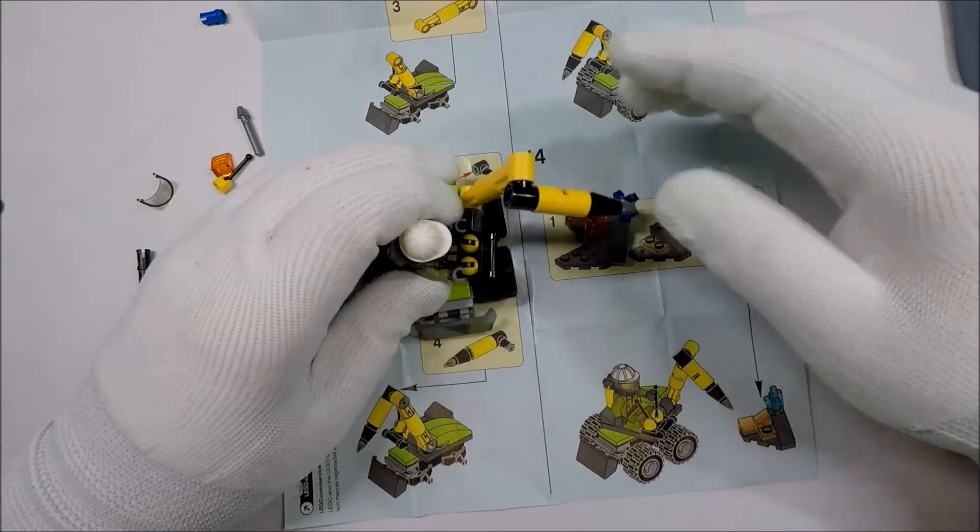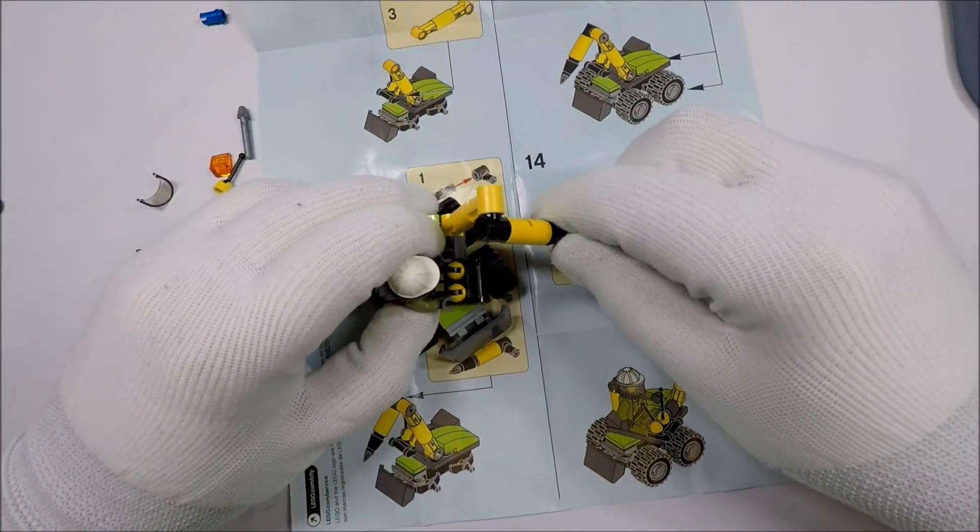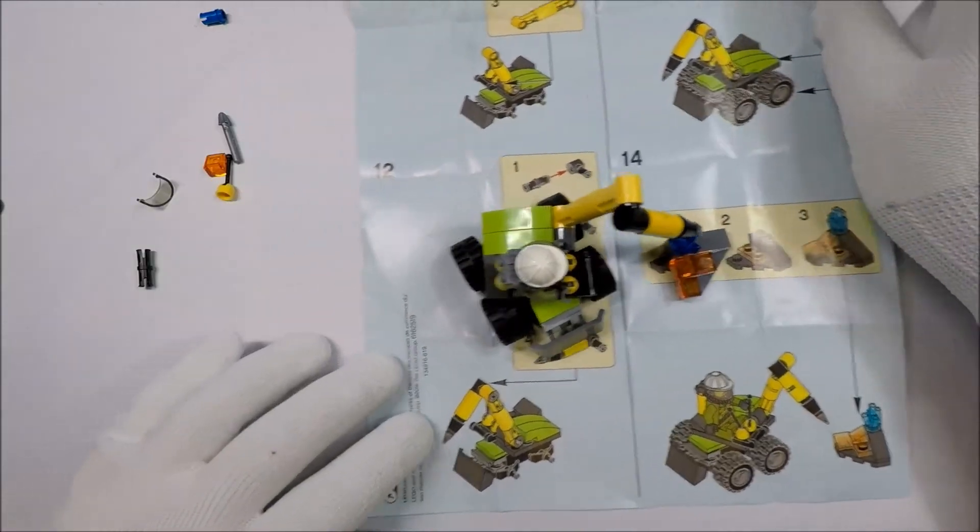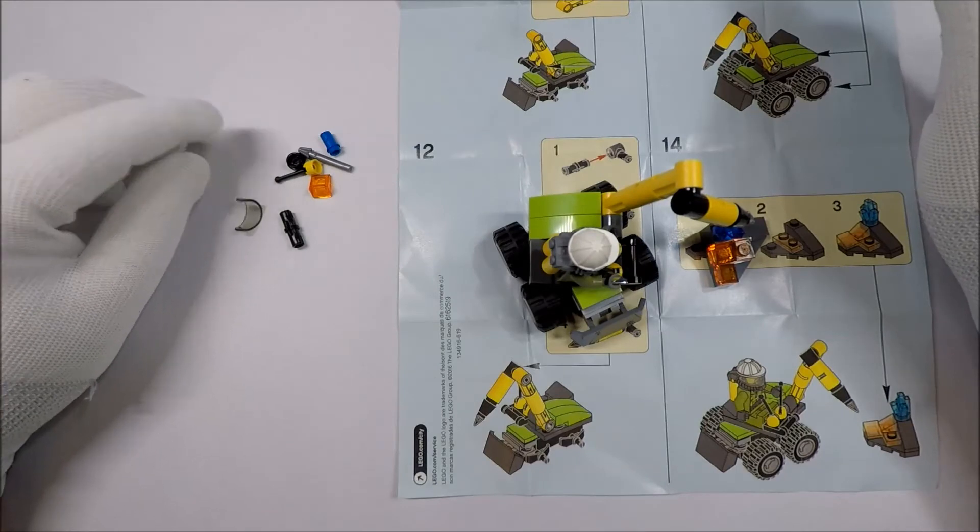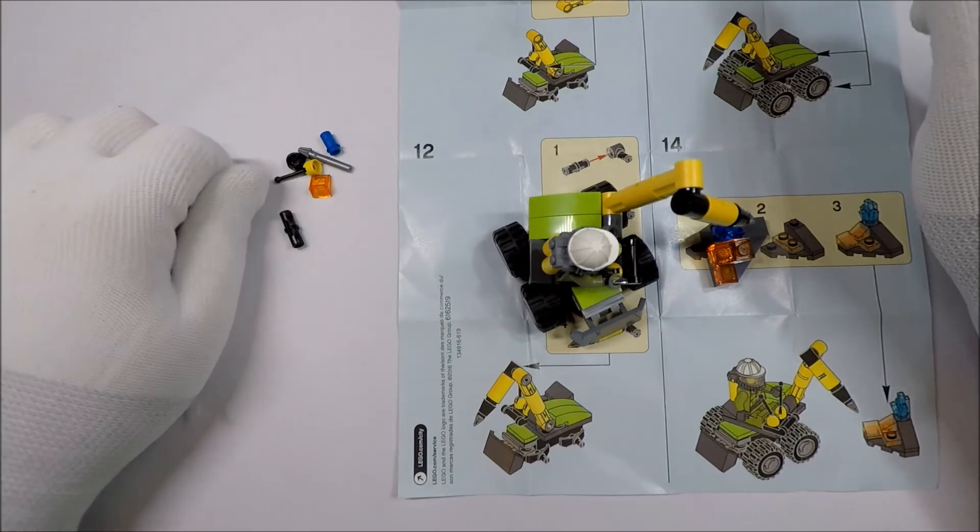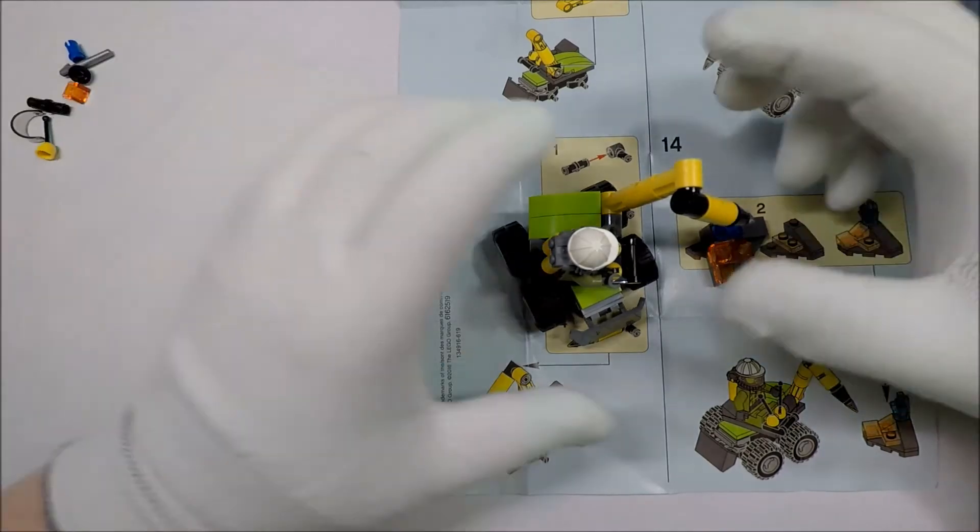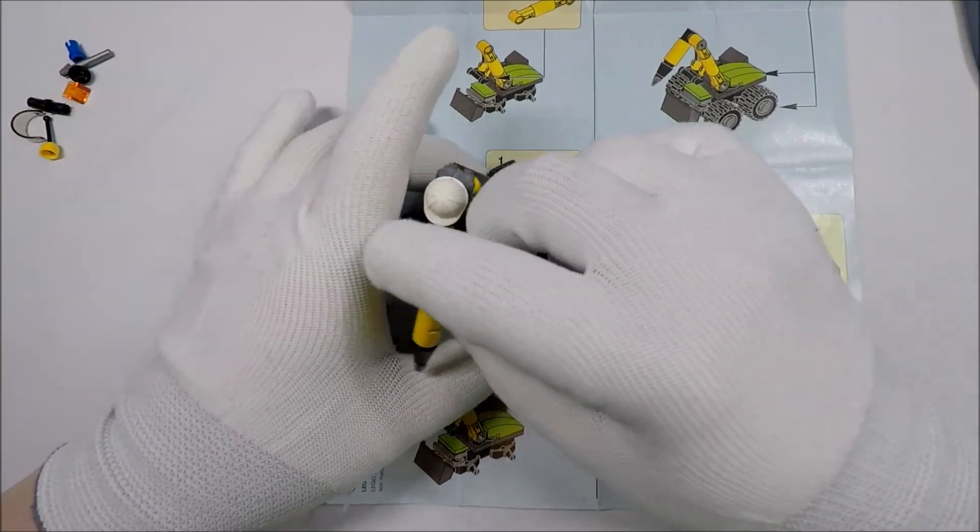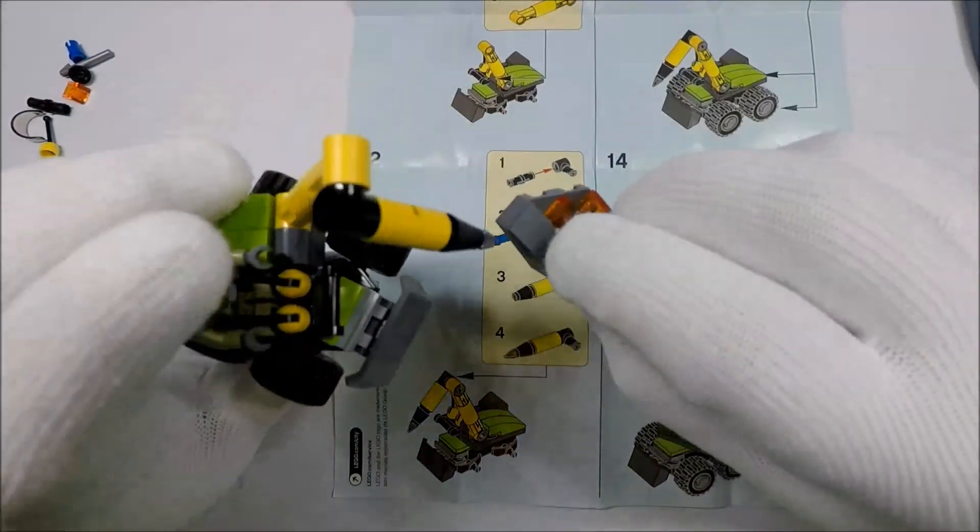And so what you have is your jackhammer and your thing that is getting jackhammered, like so. Now they gave us a bunch of extra pieces for this one. I guess probably this set uses a lot of pieces that are susceptible to either loss or breakage. You can see we got a bunch. It's kind of a cool set though. Kind of a neat little thing.